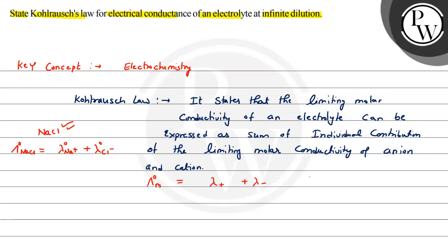Here we also include m and n, which represent the stoichiometric coefficients. For NaCl, there is one Na and one Cl atom, so m and n will both be 1. You can take any values — m and n denote the stoichiometry of the ions.